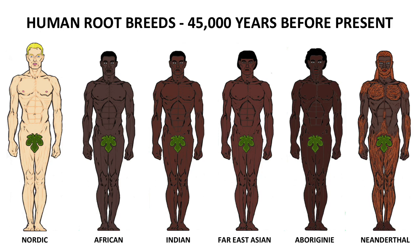45,000 years ago there were five distinct breeds: African in Africa, Nordic in Northern Europe, Indian in India, Far East Asian in Far East Asia, and Aborigine in Australia.